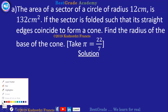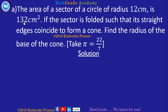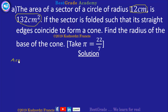The area of a sector of a circle of radius 12 centimeters is 132 centimeters squared. If the sector is folded such that its straight edges coincide to form a cone, we are finding the radius of the base of the cone. The area is given as 132 centimeters squared and the radius of the sector is 12 centimeters. We will use the area to find the angle of the sector.